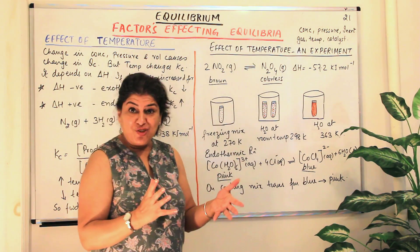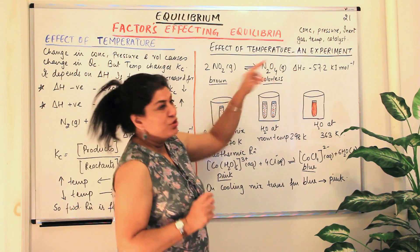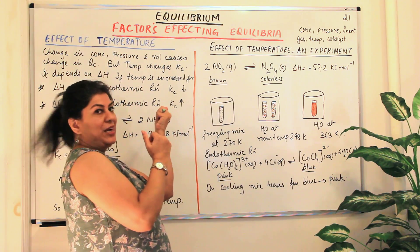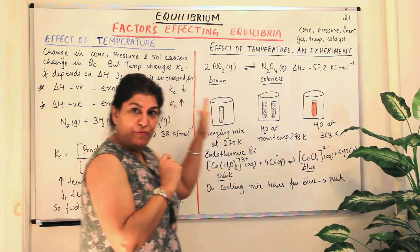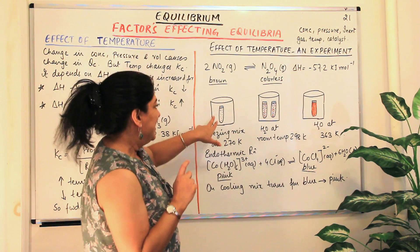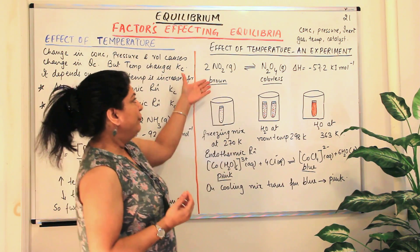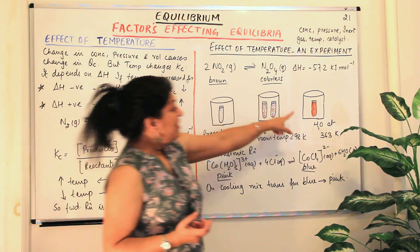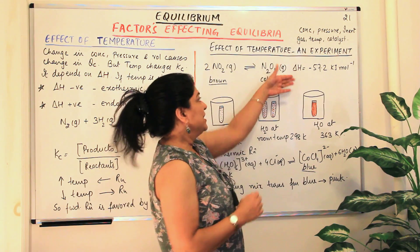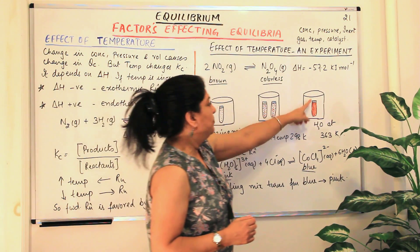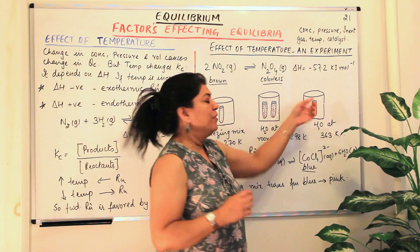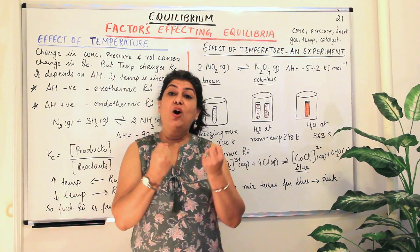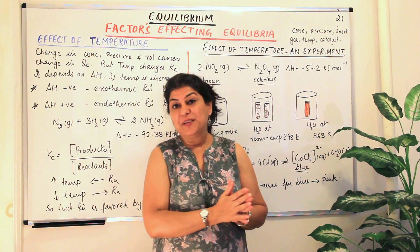Since it is an exothermic reaction: if you increase the temperature, the backward reaction is favored; if you decrease the temperature, the forward reaction is favored. In the beaker with decreased temperature, the forward reaction is favored and the brown color becomes lighter. In the beaker where temperature has increased, the backward reaction is favored and the brown color in that test tube becomes darker. By looking at the color itself, you get visible evidence of how temperature affects chemical equilibrium.